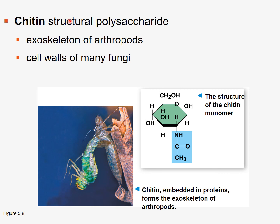Chitin is another structural polysaccharide. It is quite strong, creates very hard surfaces, and makes up the exoskeleton of arthropods. Chitin is also found in the cell wall of fungi. Looking at the structure of the glucose in chitin, carbon number two has an additional large amino group with a carbonyl group and a methyl group attached. This very large group creates a lot more strength and makes it very difficult to break down — water cannot get in to hydrolyze the connecting bonds.